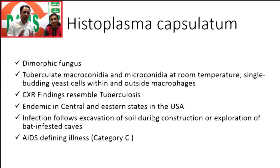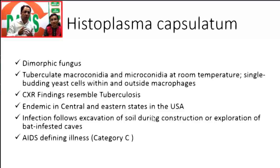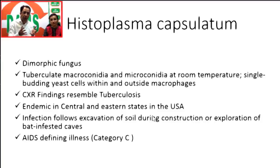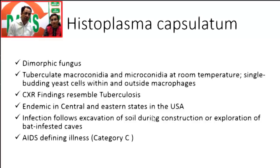Histoplasma capsulatum is a dimorphic fungus with tuberculate macroconidia and microconidia at room temperature, and single-budding yeast cells within and outside macrophages. On chest X-ray it resembles tuberculosis, and especially if a patient is a smoker with bullous emphysema, histoplasmosis can develop a cavitary form indistinguishable from TB. That is why history is crucial — in an integrated question, the image alone doesn't tell you everything until you link it to the history. It is endemic in the central and eastern states of America, especially the Ohio and Mississippi River valleys.